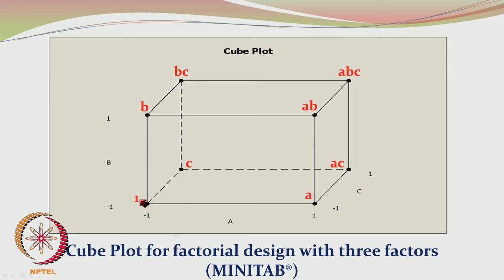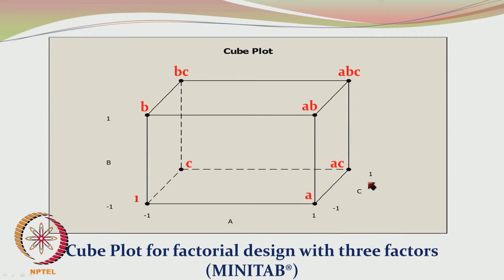The 2D representation of the cube also shows the 2² design involving factors B and C. At corner AB, factors A and B are both at their higher levels and factor C is at a lower level. When all three factors are at their higher levels, the notation is ABC. If you have understood the 2² design, you will have very little difficulty understanding the 2³ concept.